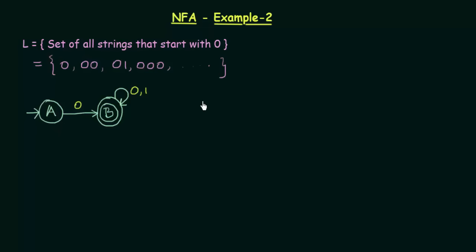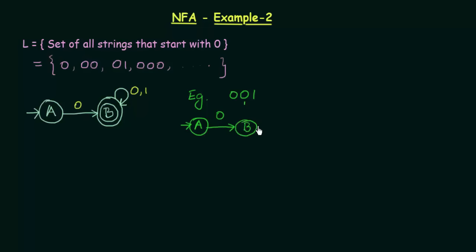Let me pass a few strings. For string 001: I start at state A, and on getting input 0, it goes to state B. The next input is 0 again, so B on getting input 0 goes to B itself. I have now reached the end of the string and I am in state B. Since state B is the final state, this string is accepted.